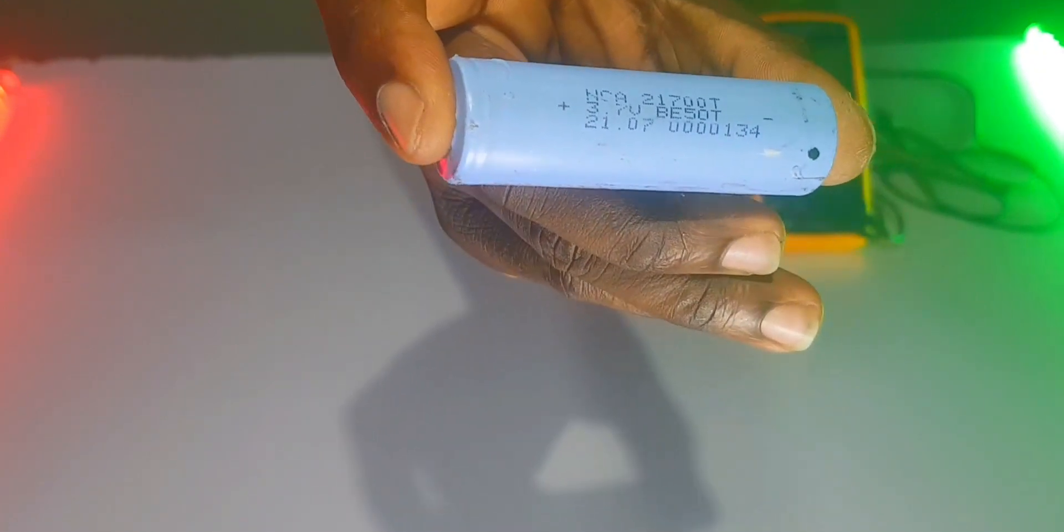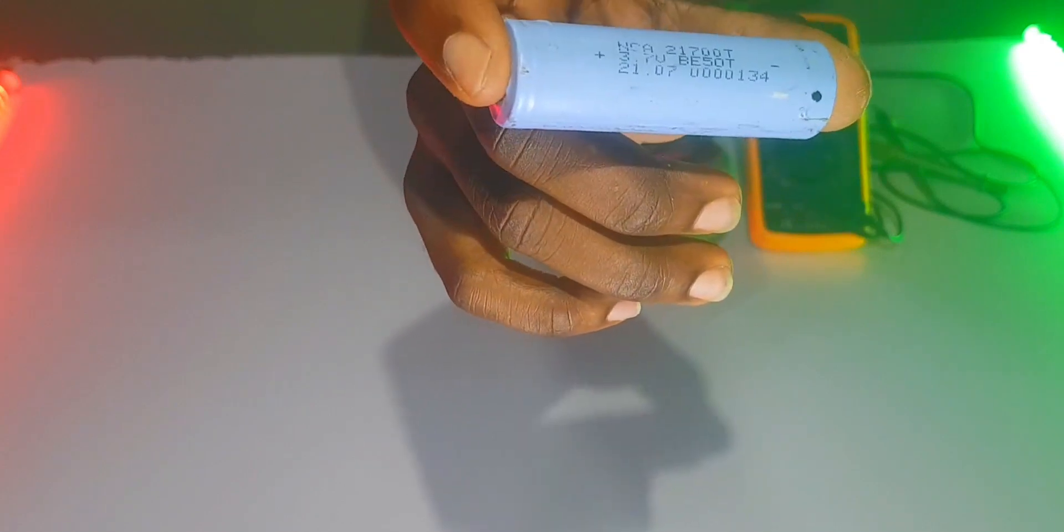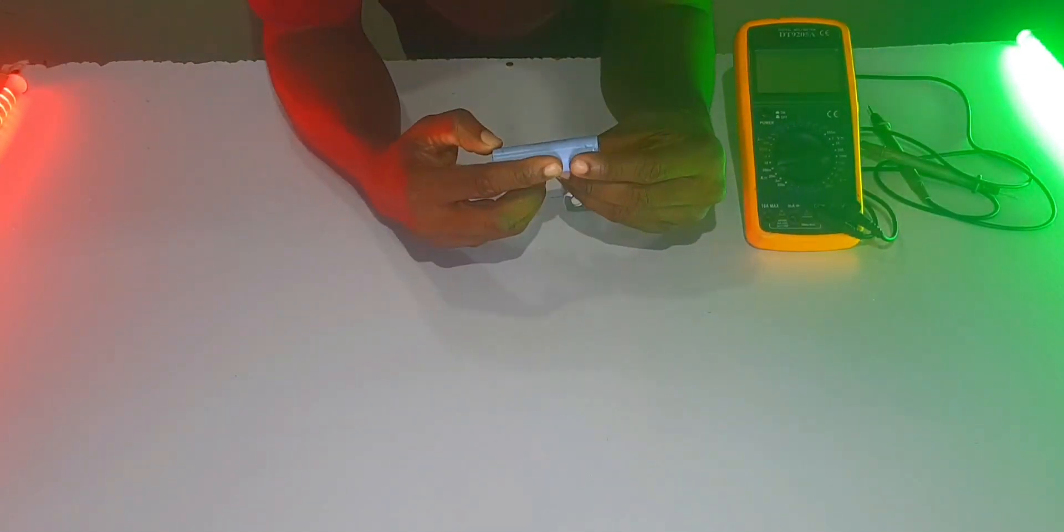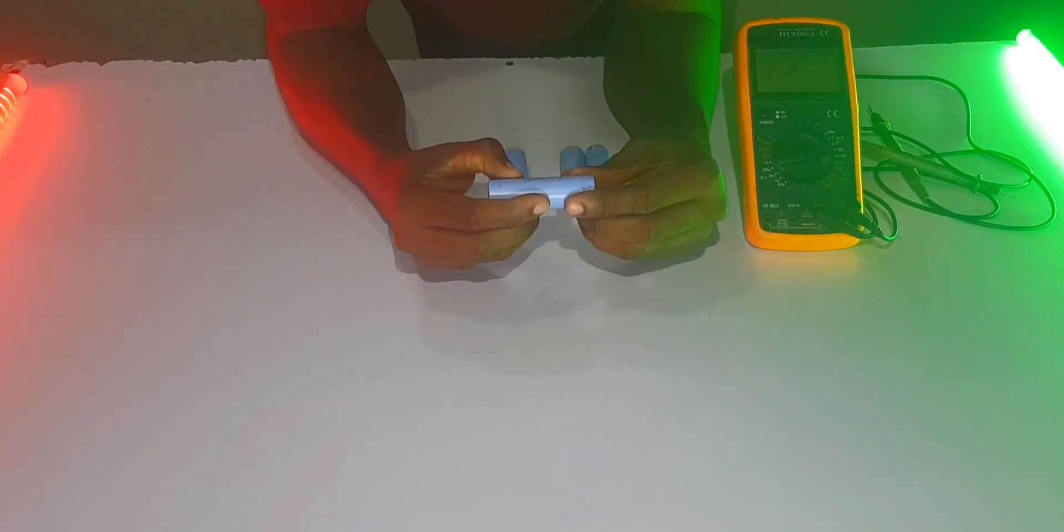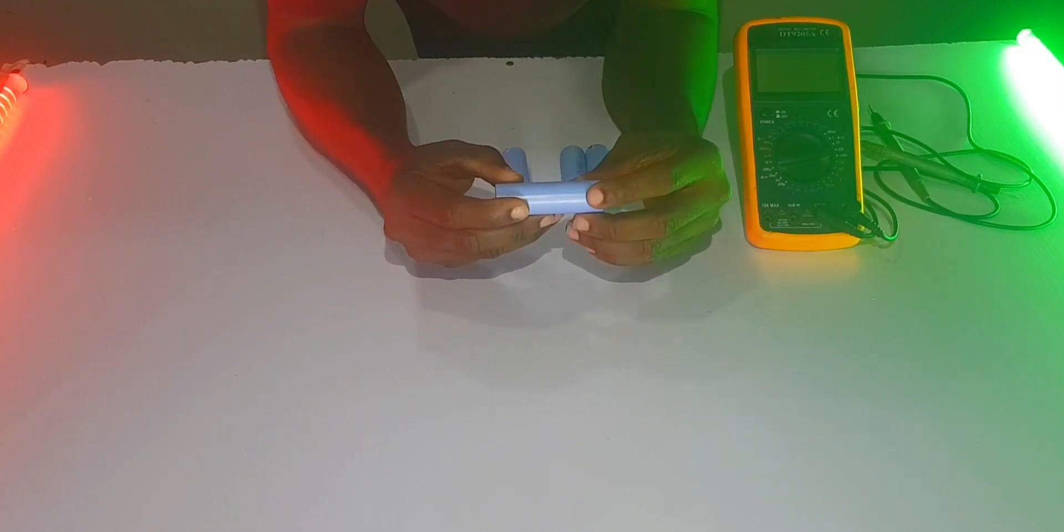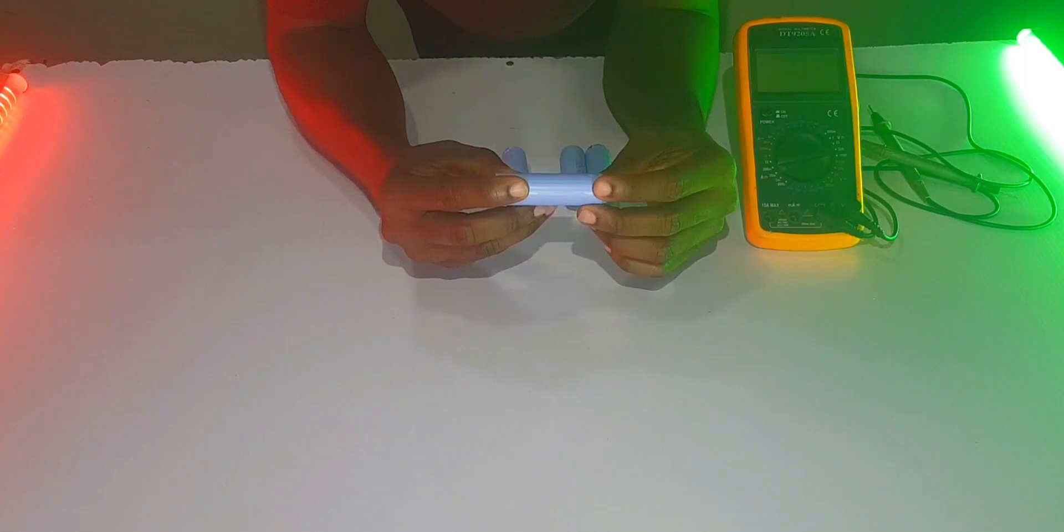The NCA 21700 battery - it's quite different from the 18650. Let's get to the first test. The first test is going to be the water test, so if we put these batteries in water, let's see what the reaction is going to be. One thing I would say is this is quite dangerous and should not be tried at home. I have safety precautions here just in case anything goes wrong.